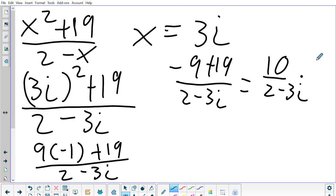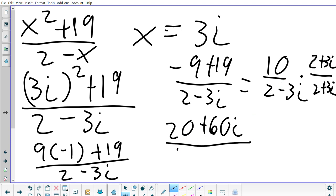The conjugate is the bottom part of a positive. So then I can multiply this out. So then I get 20 plus 60i on the top and then on the bottom I would get 4 minus 9i squared. That's 2 times 2 is 4, negative 3 times positive 3 is negative 9, and i times i is i squared.